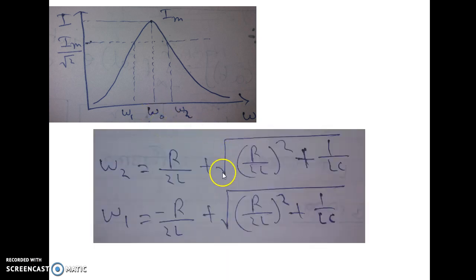In our previous video, we have derived the mathematical expression of the omega 2 and omega 1, that is omega 2 equal to r by 2L plus root over of r by 2L square plus 1 by LC and omega 1 is minus r by 2L plus root over of r by 2L square plus 1 by LC, clear.